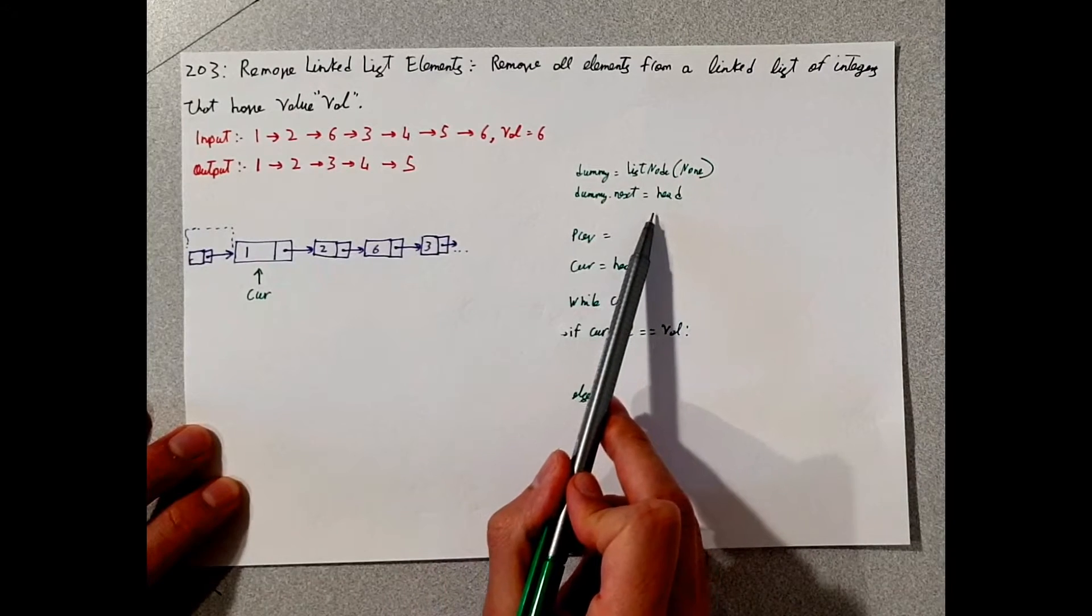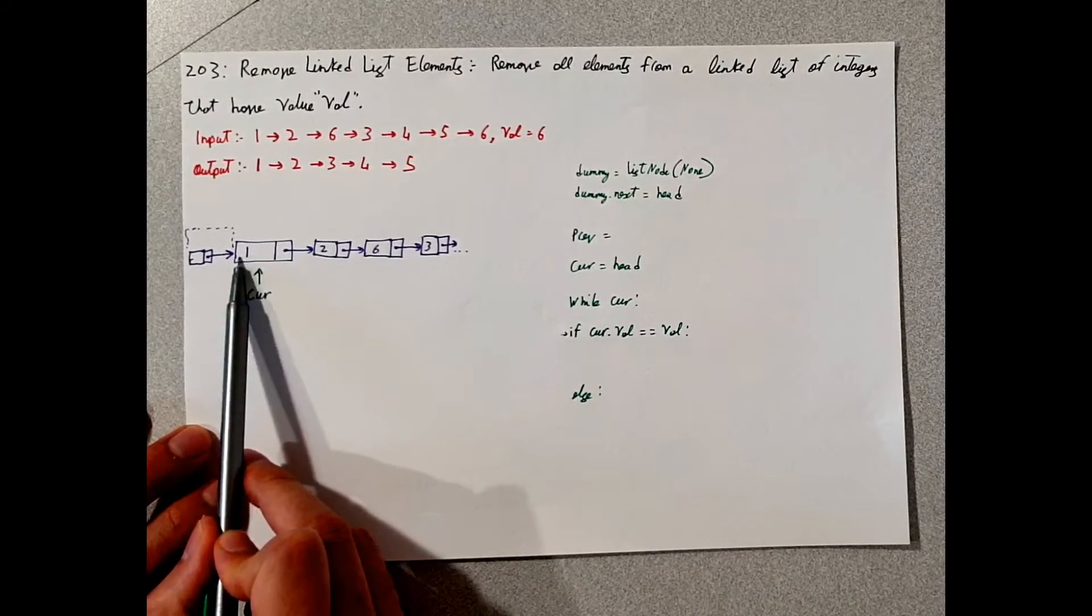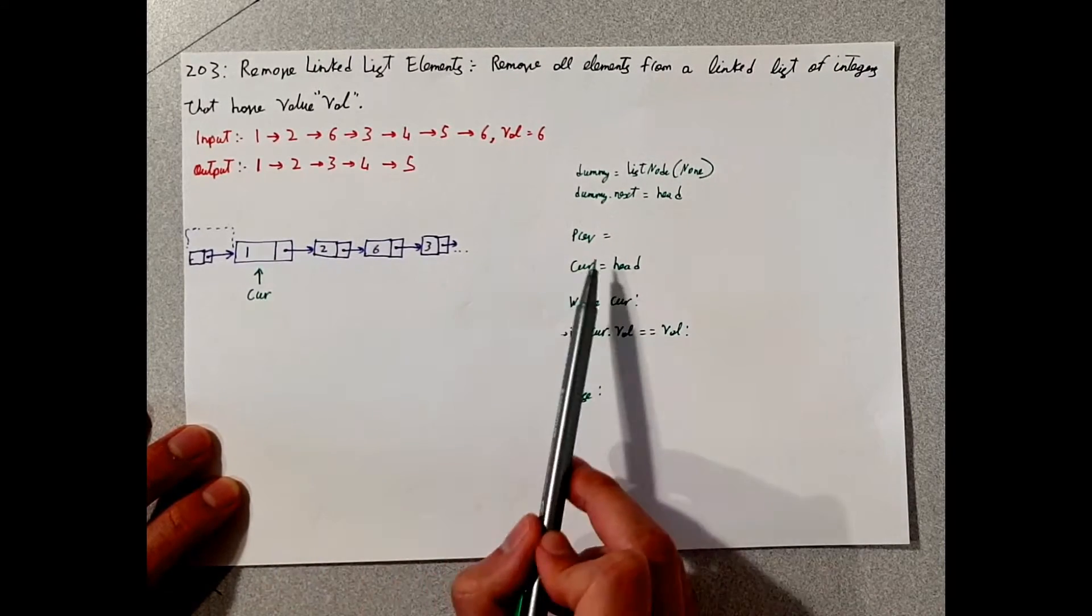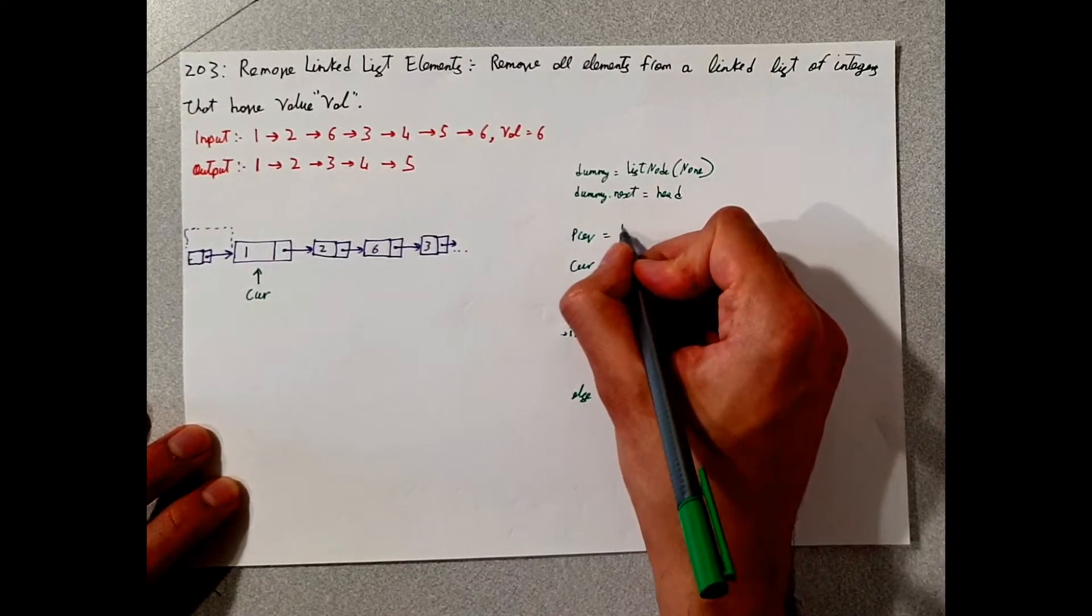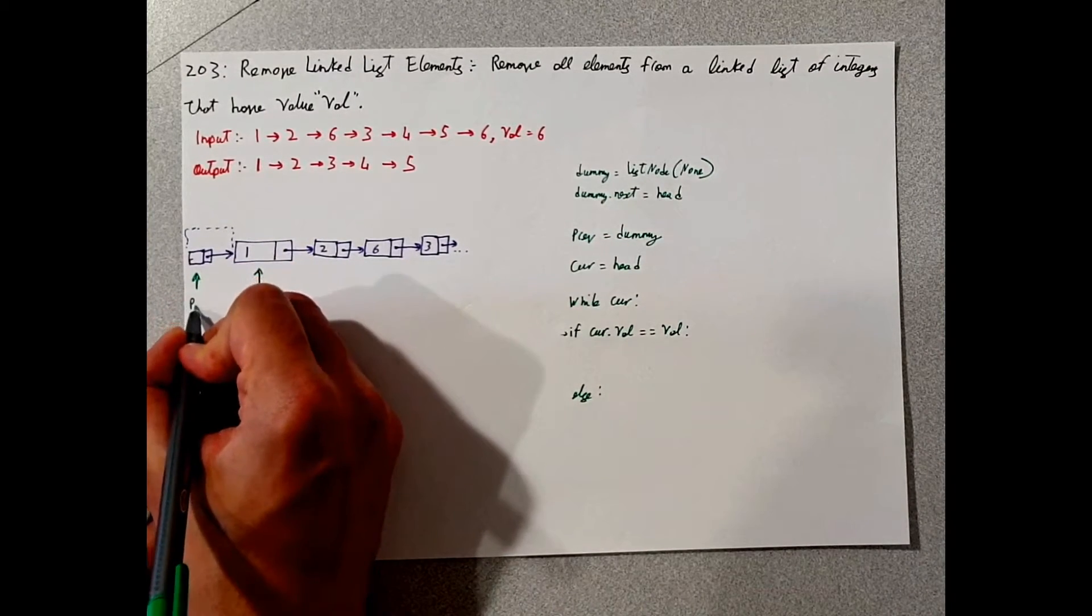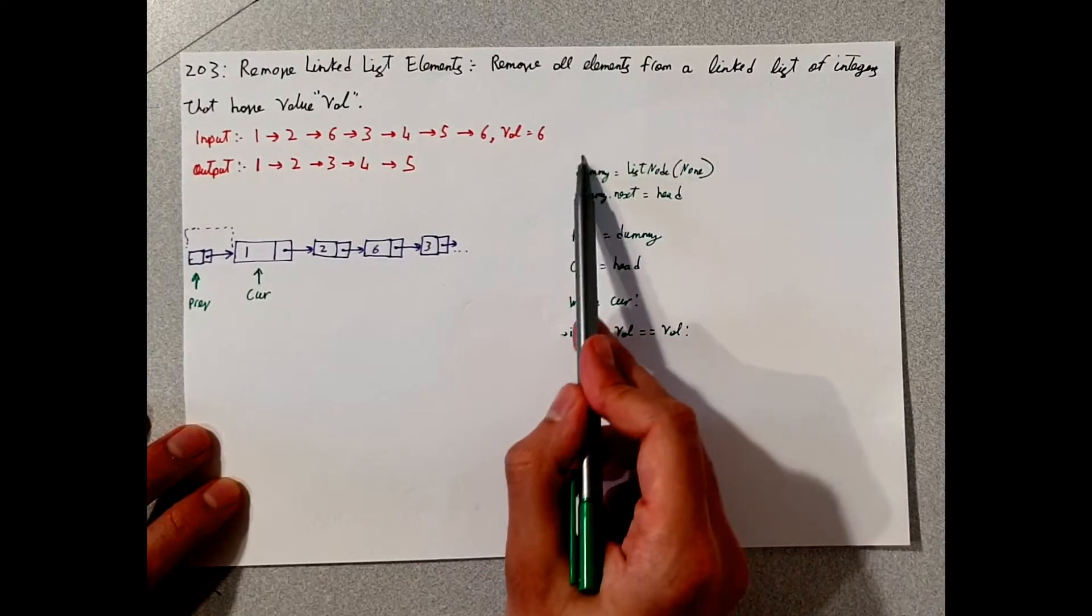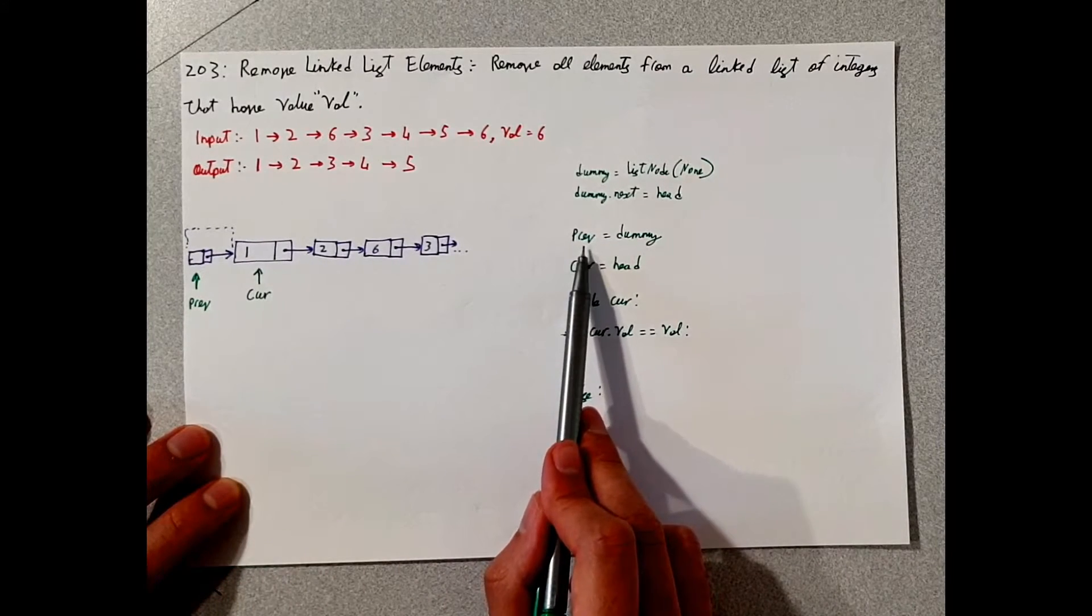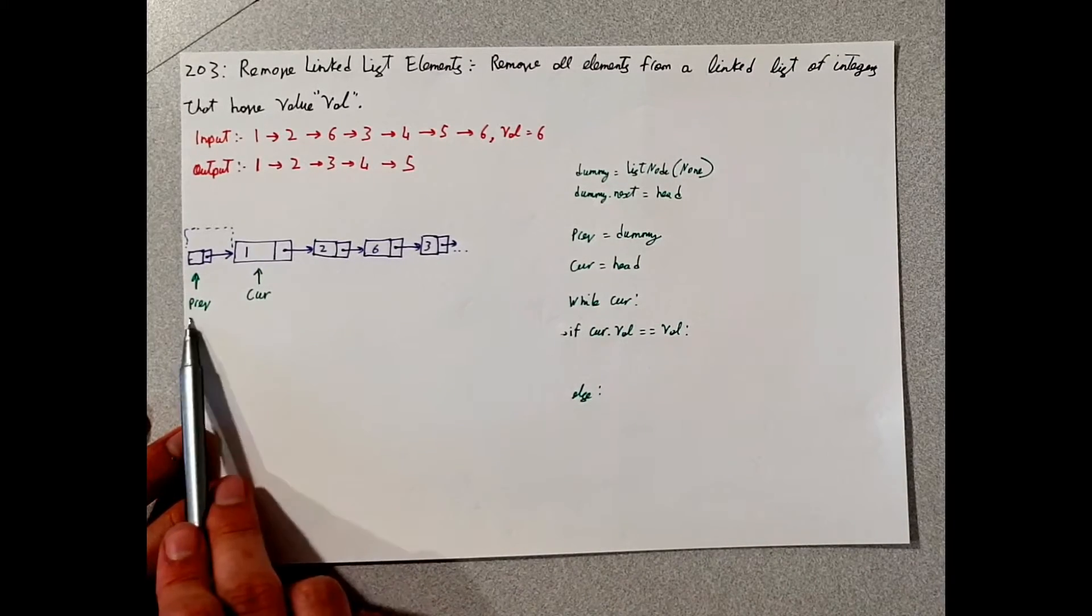So this line of code here basically says that dummy.next points to the head here, just like when the current equals the head and the previous can equal this dummy value. So previous is now here. So we created the dummy node, we point the dummy next to the head, we set the previous to the dummy value and we set the current to head.